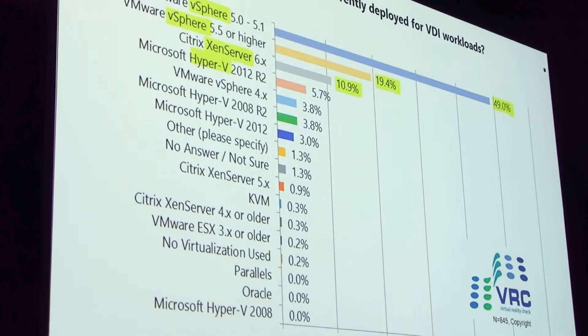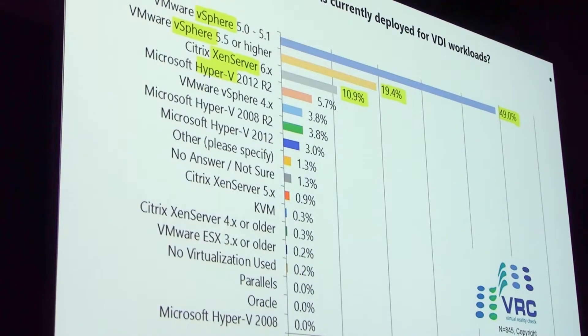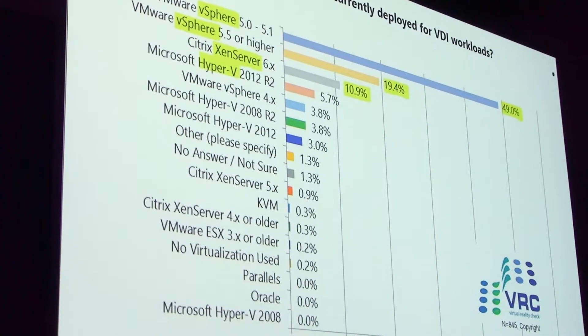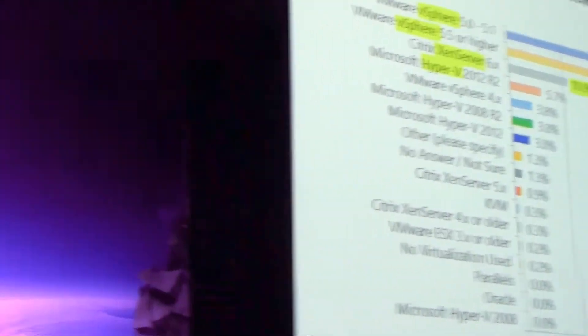Another interesting survey question: what type of hypervisor is being used in your VDI scenario? You can clearly see that a lot of people are using vSphere 5.0, 5.1, 5.5. Some people — about 10 to 11% — are using Xen Server. The unique feature of Xen Server today is vGPU support, which Benny will cover. Some people are using Hyper-V, but the majority of people running VDI are using vSphere.